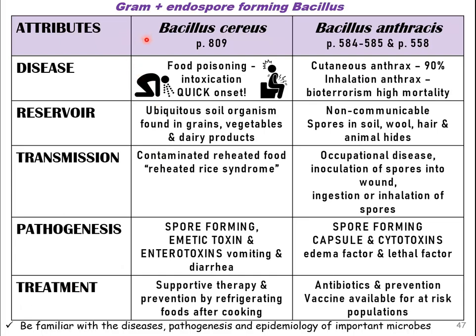So the two Bacillus species: Bacillus cereus and Bacillus anthracis. Bacillus cereus causes food poisoning, and once again this is going to be a quick onset — from eating food containing bacteria that have produced a toxin. These are spore formers and spores are pretty much everywhere in the environment. The spores land on food, then they germinate, and then they produce a toxin.